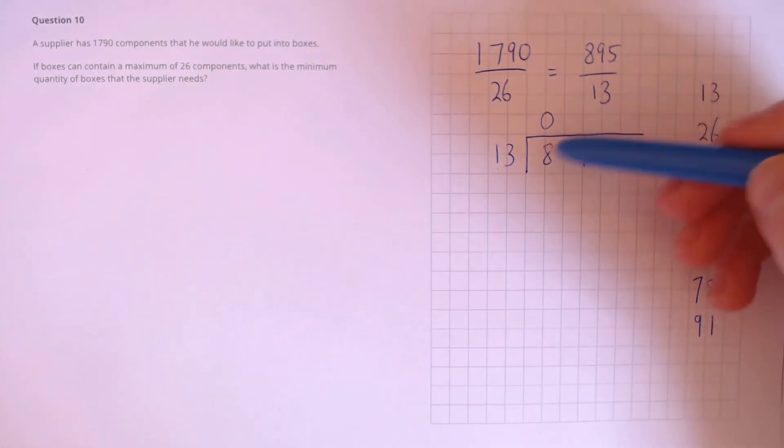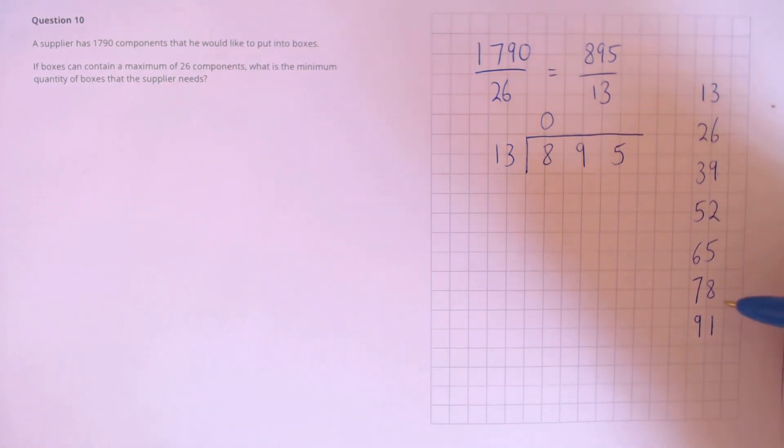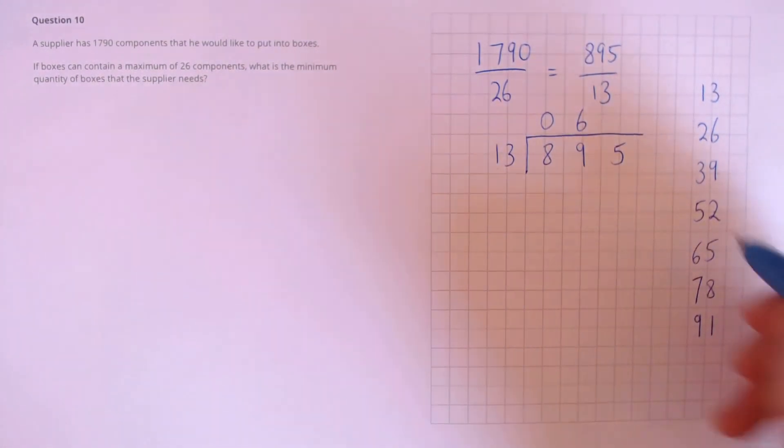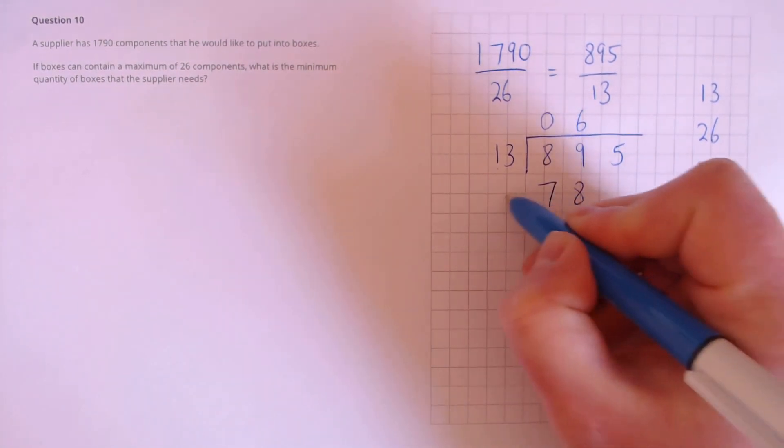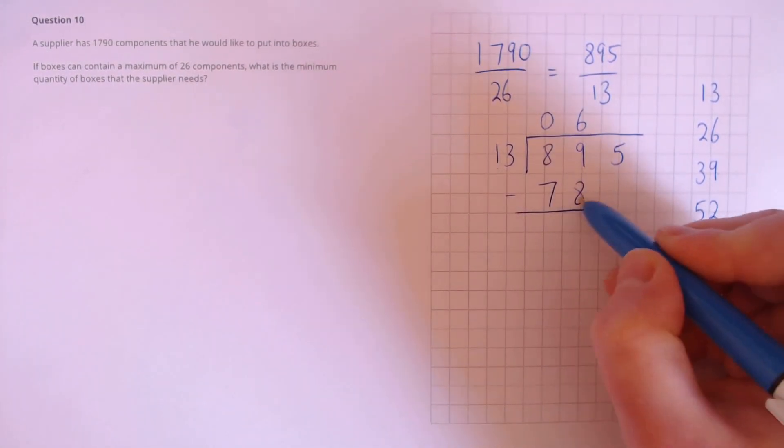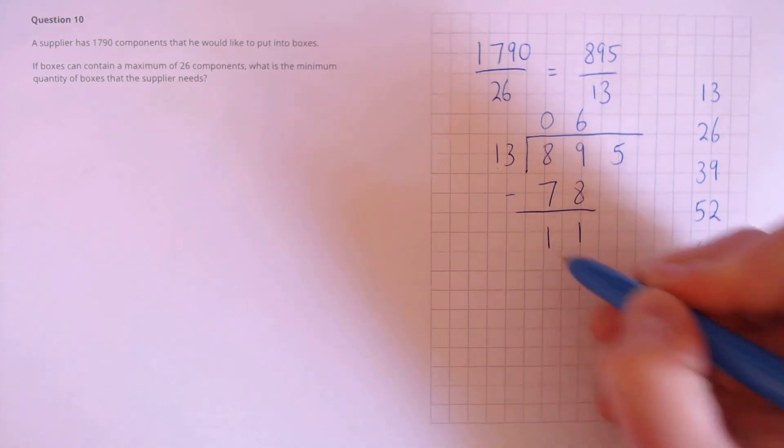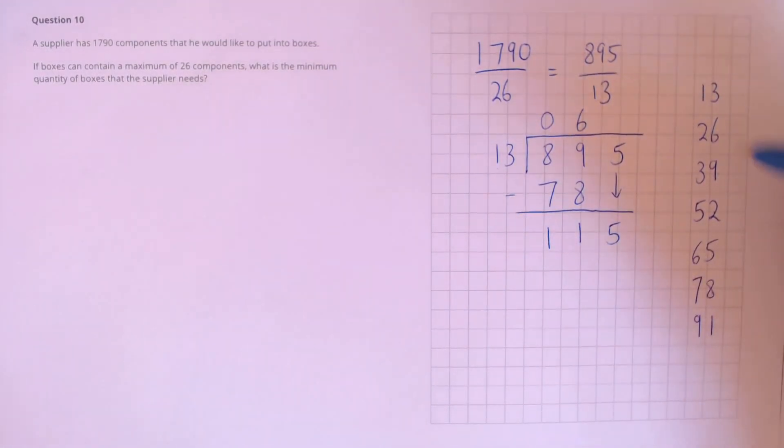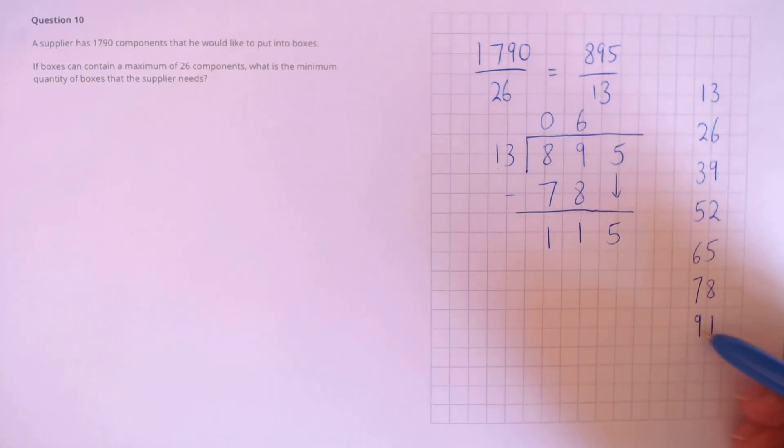So, 13's into 89, that's 1,2,3,4,5,6 times 13, and let's take that away to find out the remainder. So, 89 minus 78, that's 11. Next, bring down the 5, and we're going to have to add on a few more to our multiplication here. So, it's 104, and the next one, it looks like it would be too big, 117.